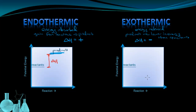If we now look at the exothermic diagram, we know that the products are going to be lower in energy than the reactants because that energy was released. So if the reactants start up at some certain amount of energy, the products are going to be lower. Again, the difference between the reactants and products on this diagram is going to be equal to the delta H, and the delta H is negative because the energy went down.